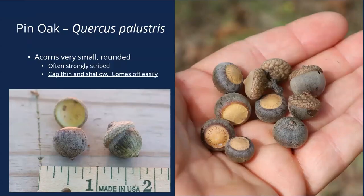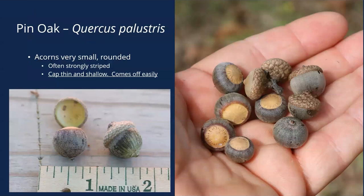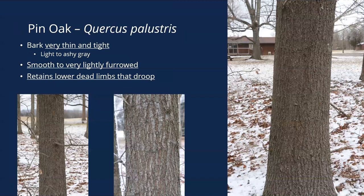Pin oak acorns look kind of like all the other small rounded red oak acorns. A lot of times they'll have striped coloration. A thin cap that comes off easily — it looks a lot like shingle oak and several other red oaks, although it does tend to have probably the thinnest and shallowest of the caps. Pin oak probably has the thinnest bark of any of our oak species — really tight bark, almost no ridge and furrow nature to it, almost just smooth. It retains those lower dead limbs that droop, even on large pin oaks.